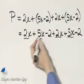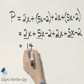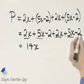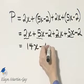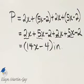2 and 5 is 7, plus 2 is 9, plus 5 is 14, so that's 14x, and then negative 2 plus negative 2 is minus 4. There is my perimeter, and it is in inches.